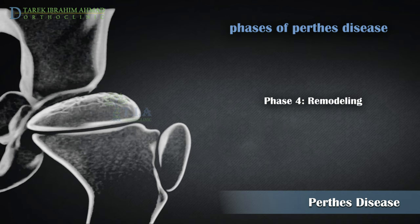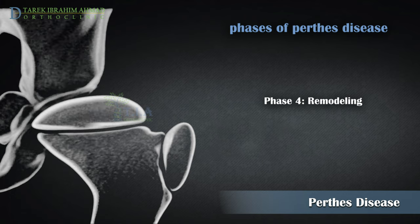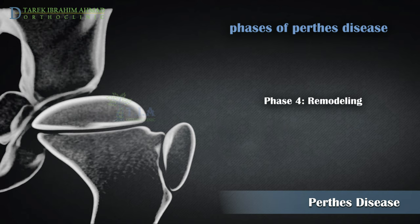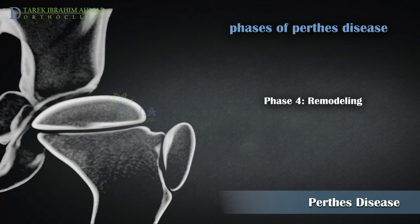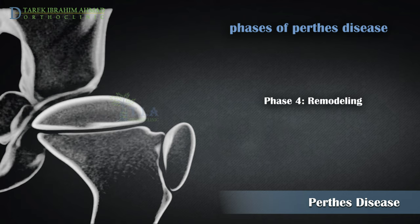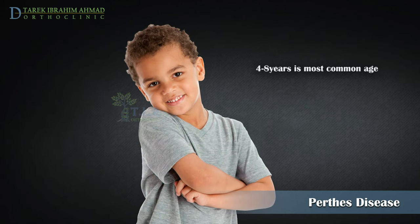Phase four: the remodeling stage. In this stage, bone regrowth is complete and the femoral head has reached its final shape. How close the shape is to round will depend on several factors, including the extent of damage that took place during the fragmentation phase, as well as the child's age at the onset of disease, which affects the potential for bone regrowth.